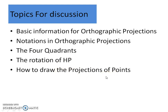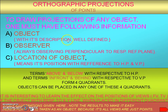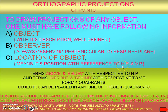We are concentrating on points. For drawing orthographic projections, we need three important pieces of information. One is the object — that means with a well-defined description in a well-defined manner. The second is the observer, who is always looking perpendicular to the respective reference plane, and the rays from the eyes are going parallel. The third is the location of the object, meaning its position with respect to HP and VP.